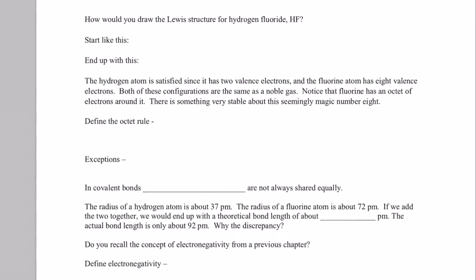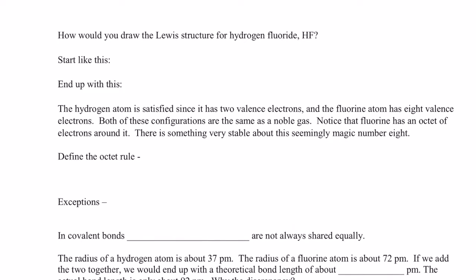Alright. So how would we draw the Lewis structure for the molecule HF? Well, let's draw the dot picture for hydrogen. Isn't its dot picture H with one dot? Remember, its electron configuration is 1s1. And fluorine, we just saw its dot picture. Doesn't it have three pairs and one by itself?